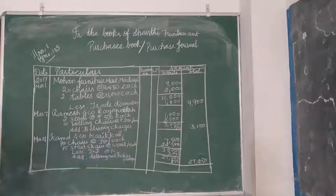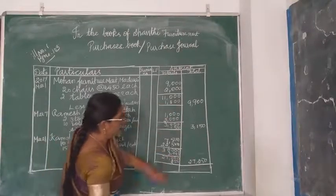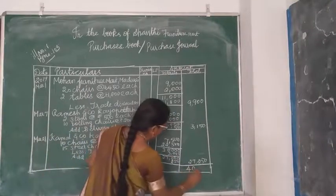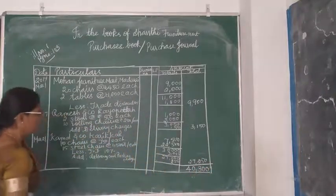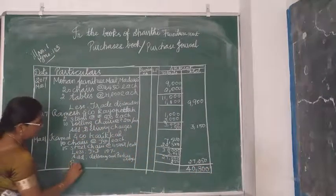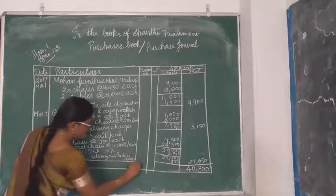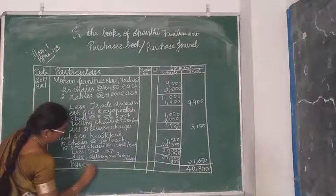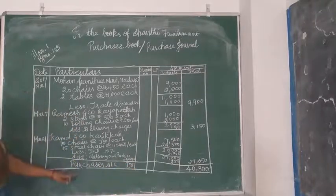You can add up all the outer column amounts. The total purchases amount is 40,300 rupees. That is the total purchases. Now, purchases account — debit. We are going to debit the purchases account.